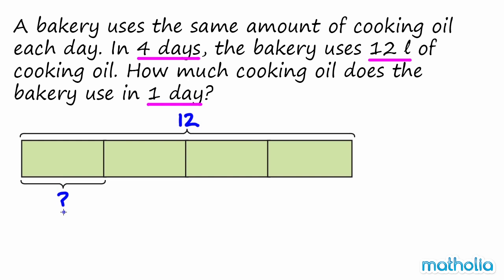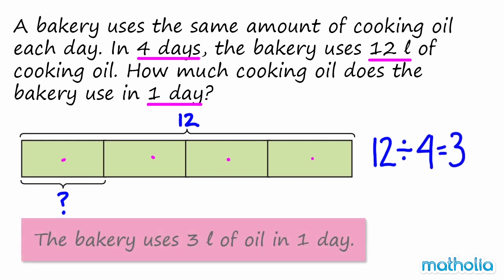The bakery uses the same amount of cooking oil each day. So to find how much cooking oil they use in 1 day, we divide 12 by 4. 12 divided by 4 equals 3. So the bakery uses 3 litres of oil in 1 day.